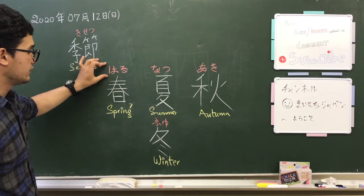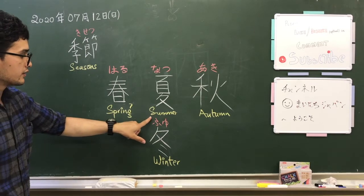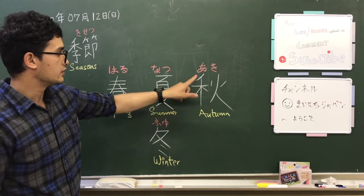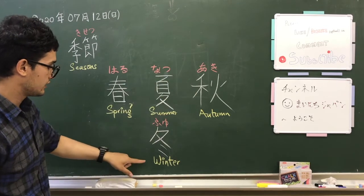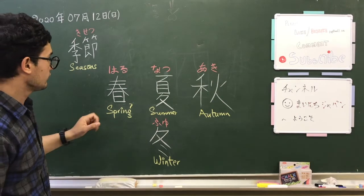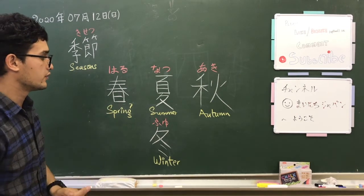Kisetsu comprises of these four main seasons: spring which is Haru, summer which is Natsu, autumn which is Aki, and winter which is Fuyu. These are the four main seasons.